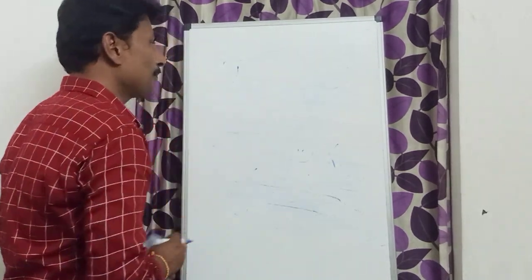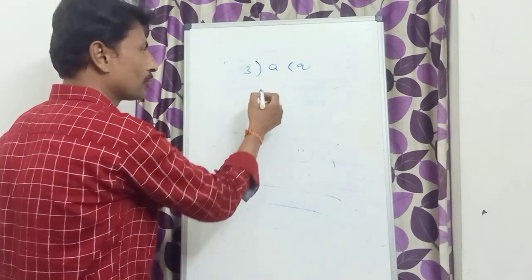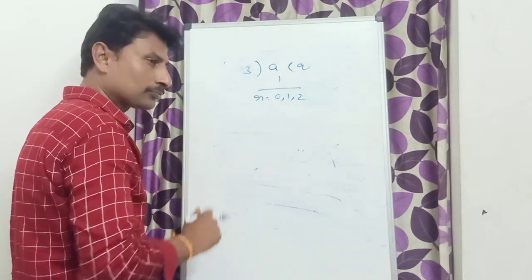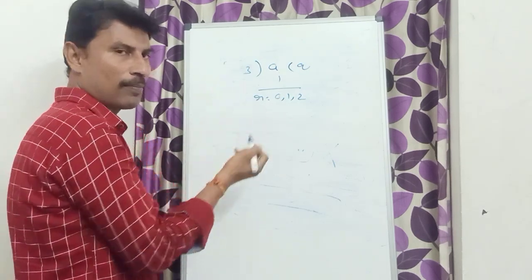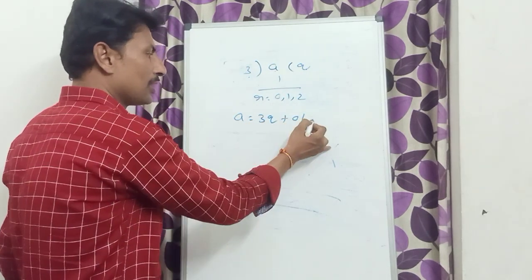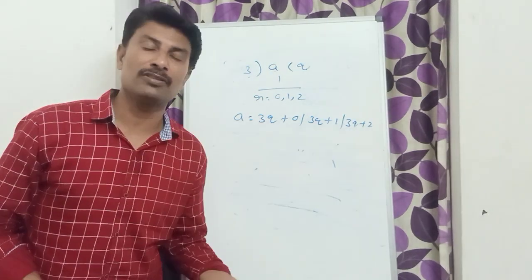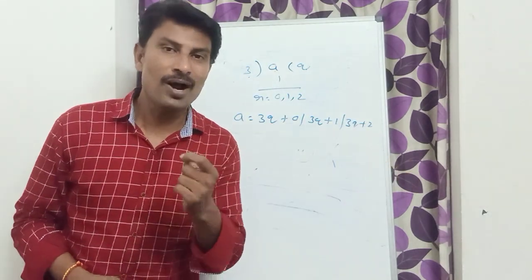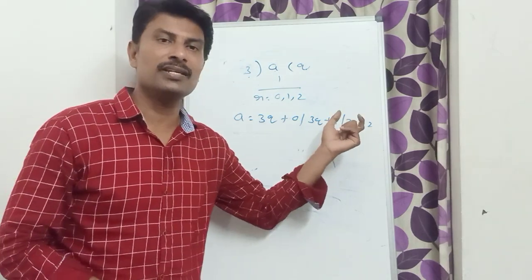For example, if we divide by 3, the possible remainders are compulsorily 0, 1, or 2. Now, when you divide integers by 3, it leaves remainder 0 for some integers, remainder 1 for some integers, and remainder 2 for others.